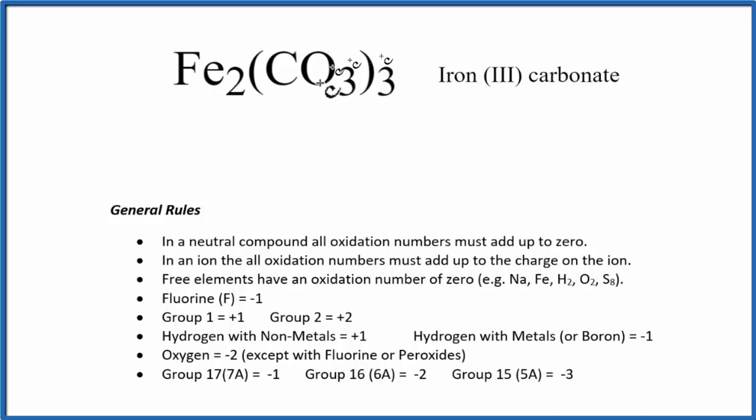Iron three carbonate is a neutral compound. We don't have a plus or minus up here like we would with ions. If it's a neutral compound, all those oxidation numbers have to add up to zero. That's going to be really helpful when we try to figure out the oxidation number on the iron.